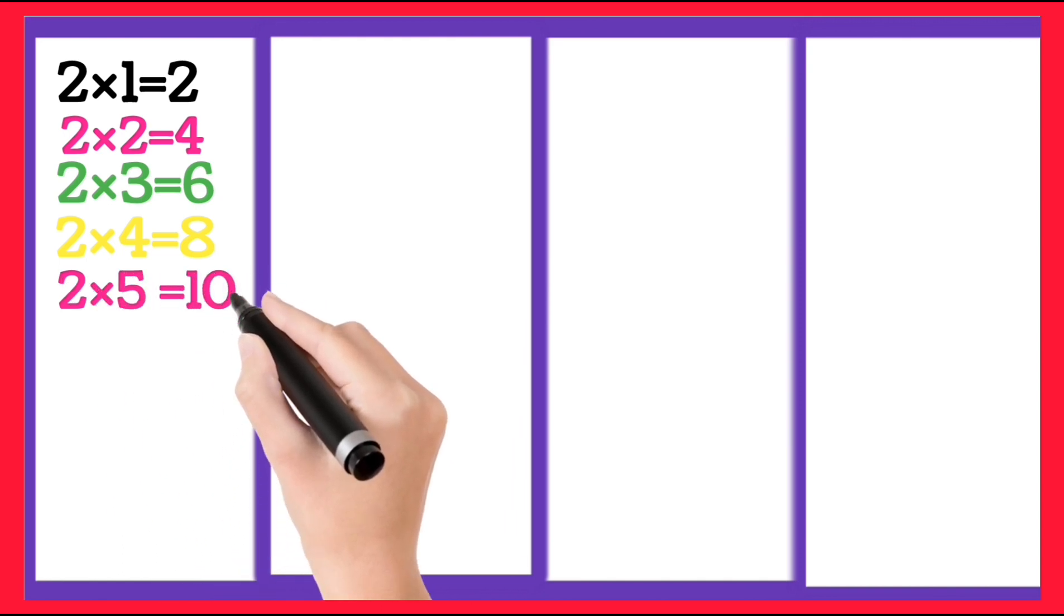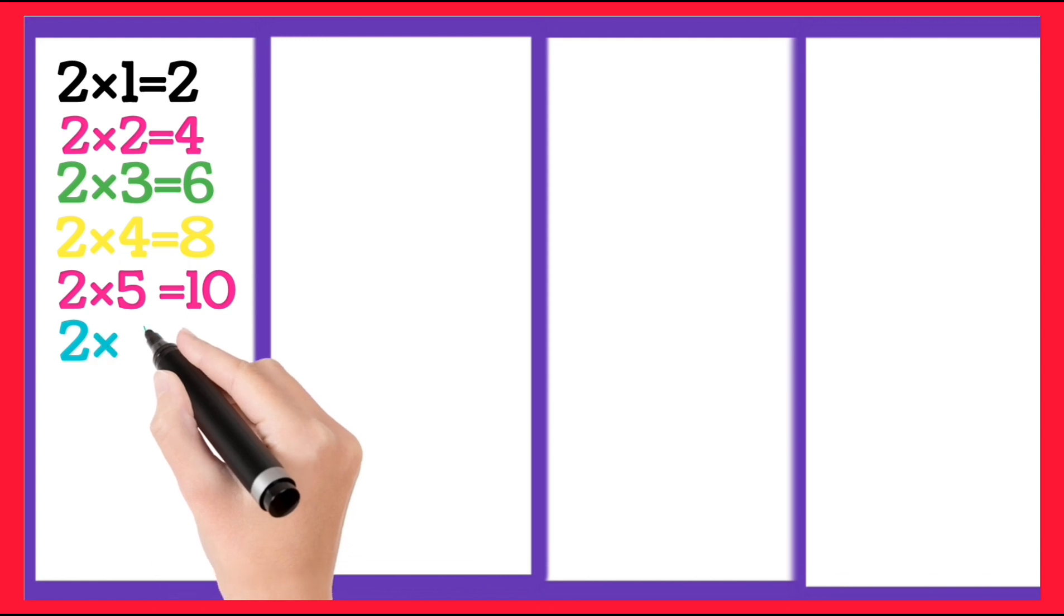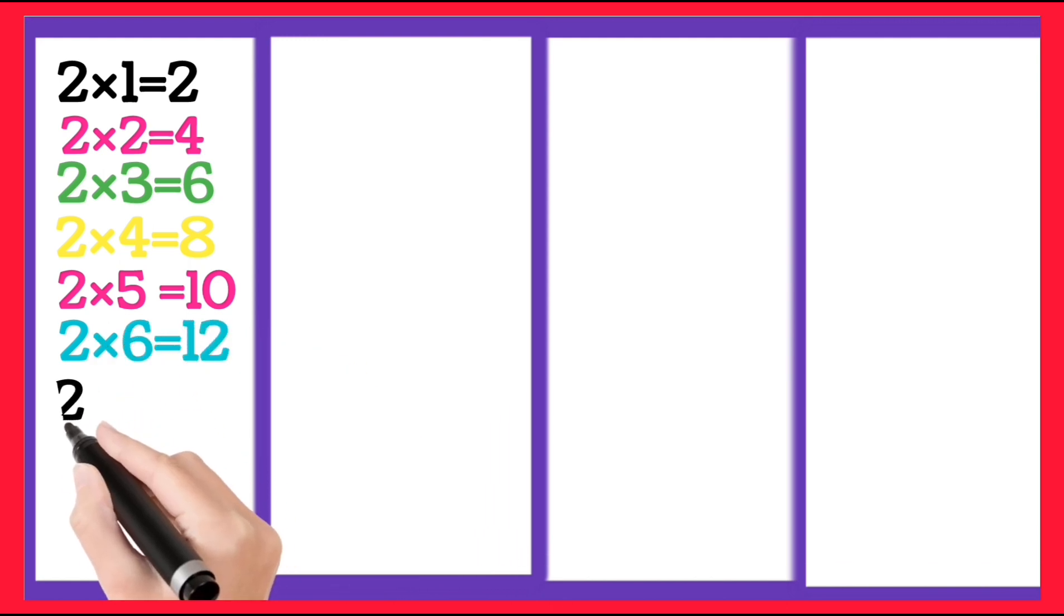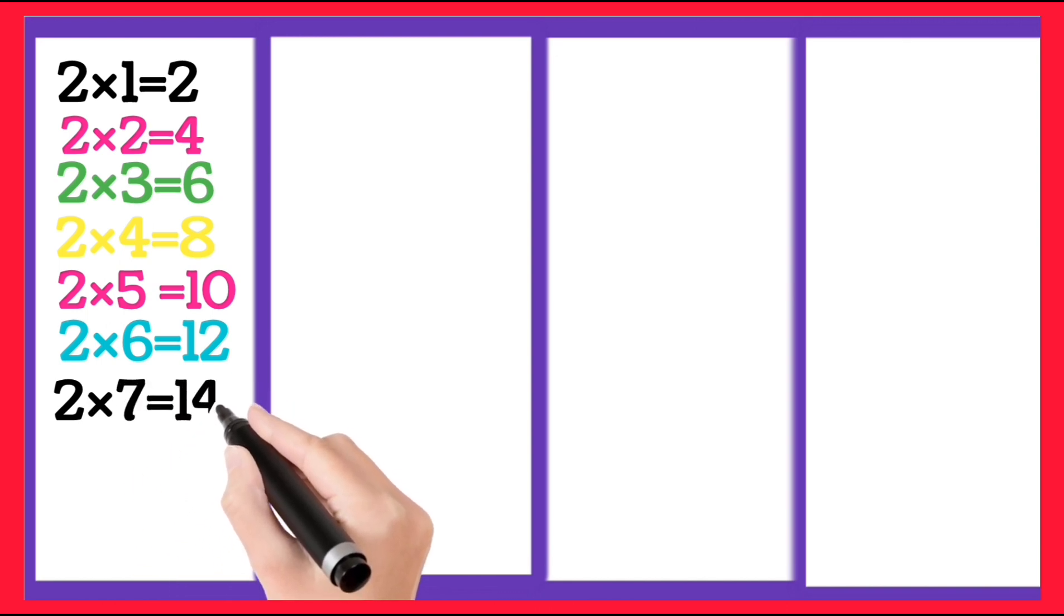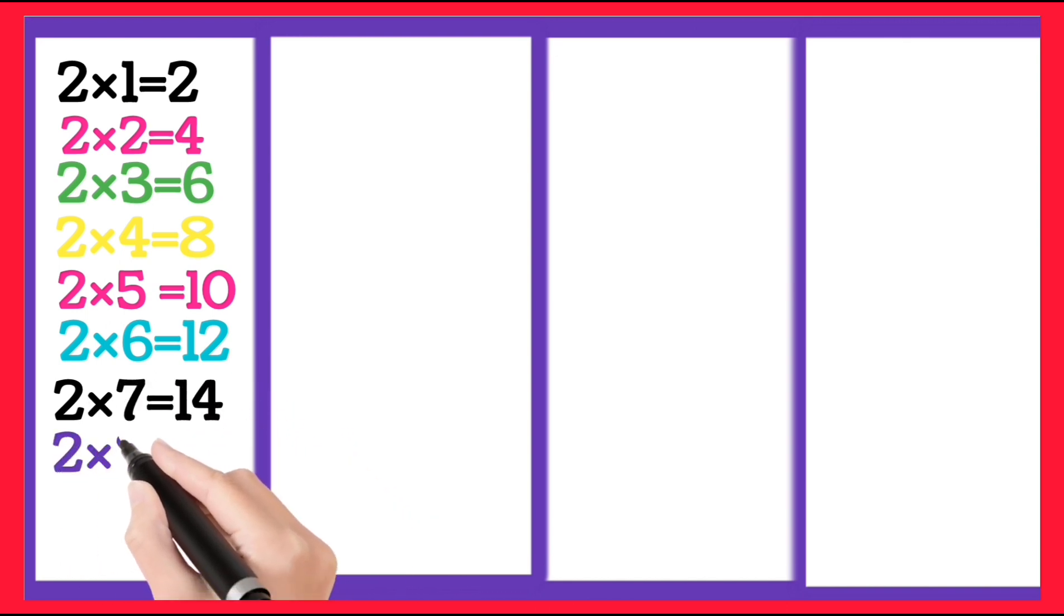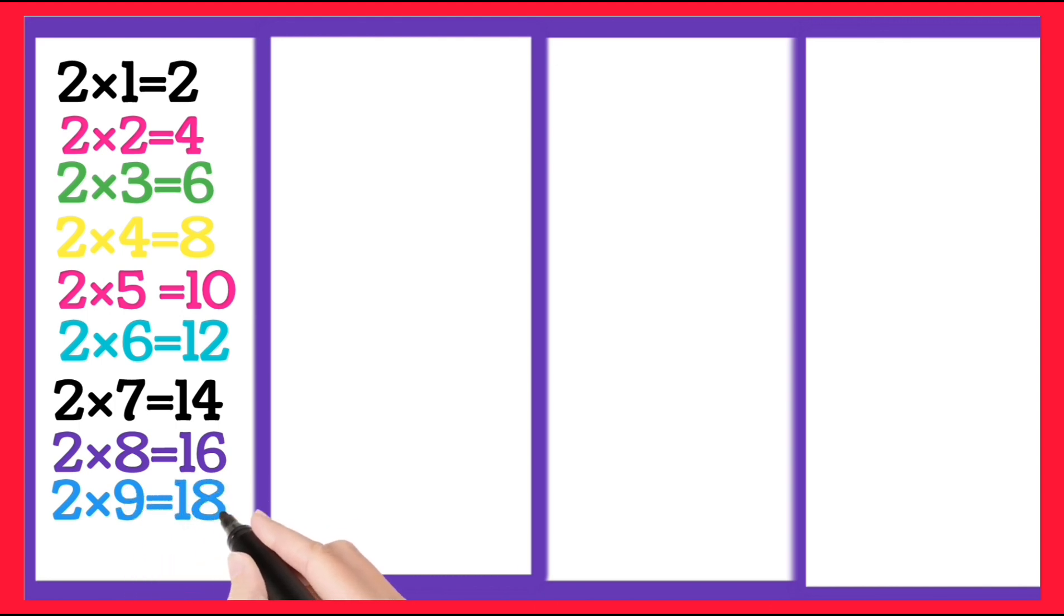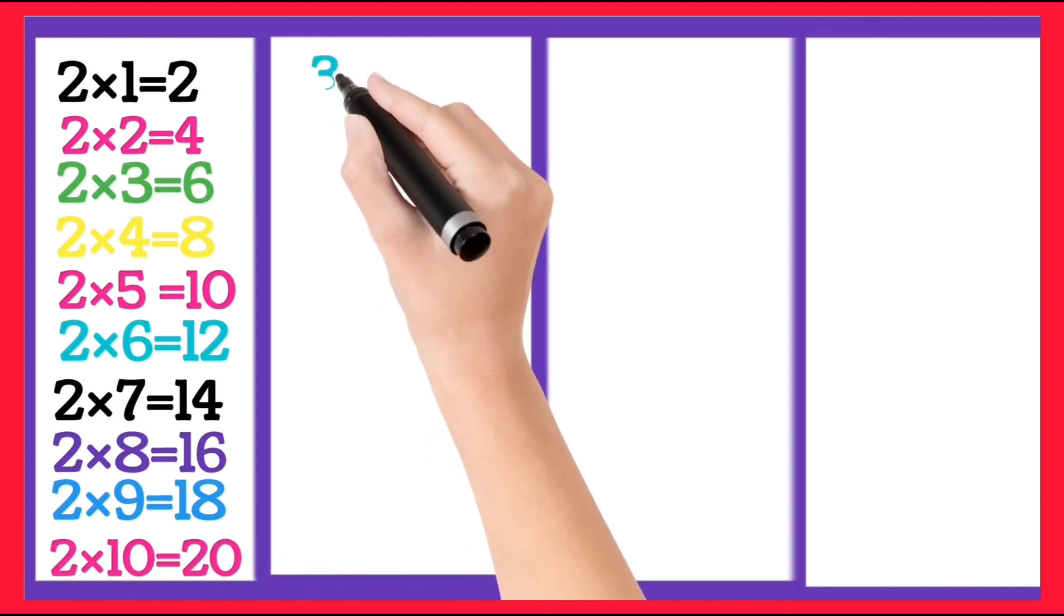2 4's are 8, 2 5's are 10, 2 6's are 12, 2 7's are 14, 2 8's are 16, 2 9's are 18, 2 10's are 20.